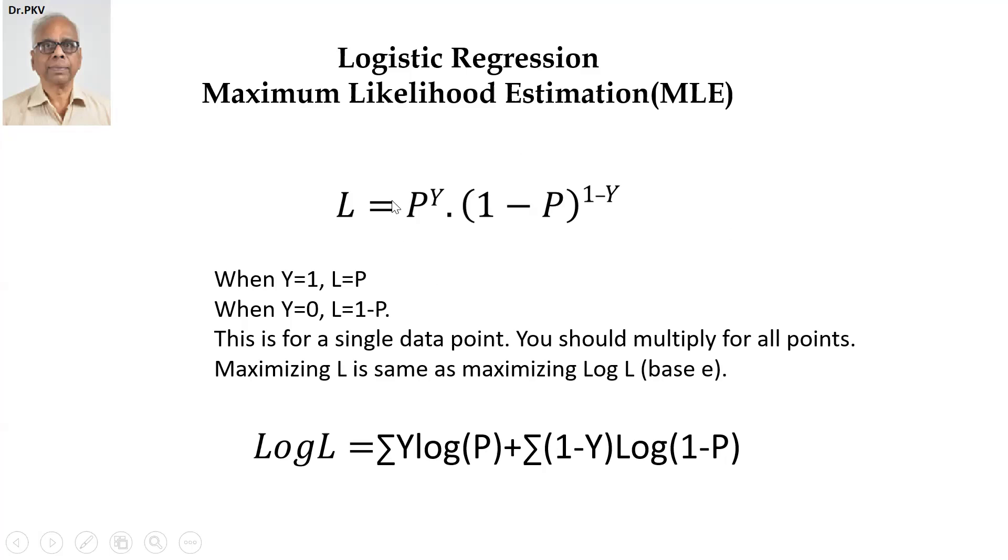So the joint probability will be the product of N observations. To simplify, I take the logarithm and natural logarithm of L equal to sigma Y log P plus sigma 1 minus Y log 1 minus P. You maximize L, which means it is same as maximizing the log L.